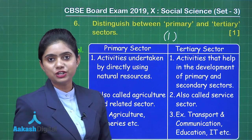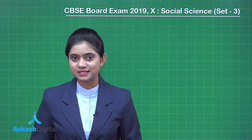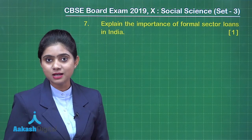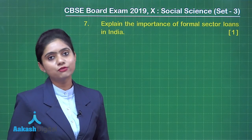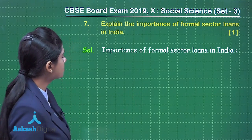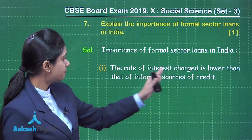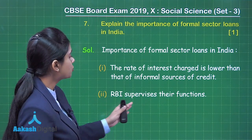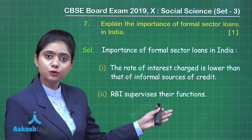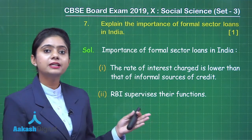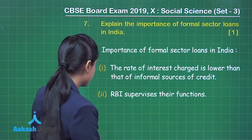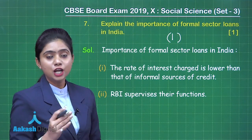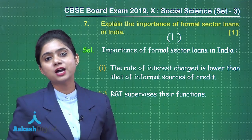Question number 7: Explain the importance of formal sector loans in India. Formal sector loans are much more systematic compared to informal sector loans. First, the rate of interest charged is lower than that of informal sources of credit. Second, the RBI supervises their functioning. These two points each carry half a mark, giving you one mark in total.